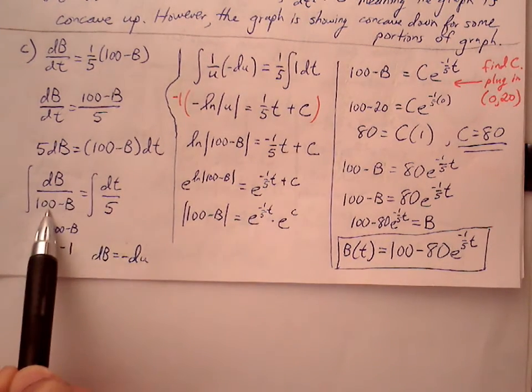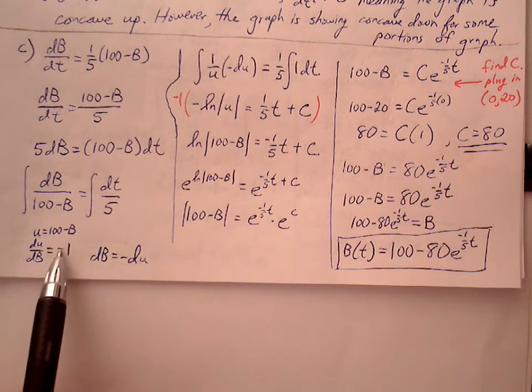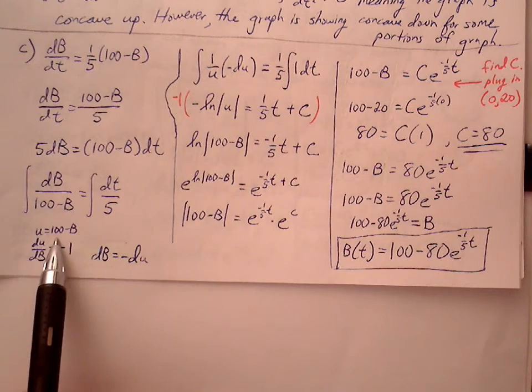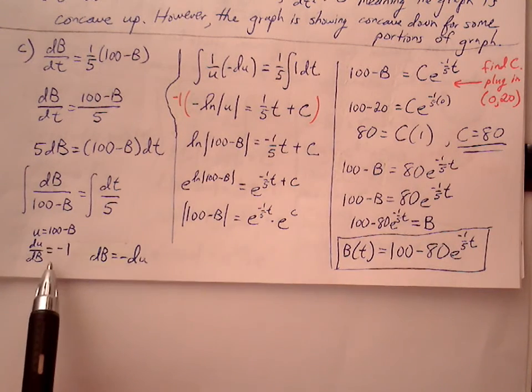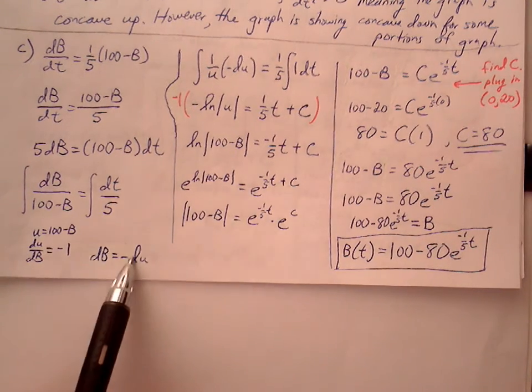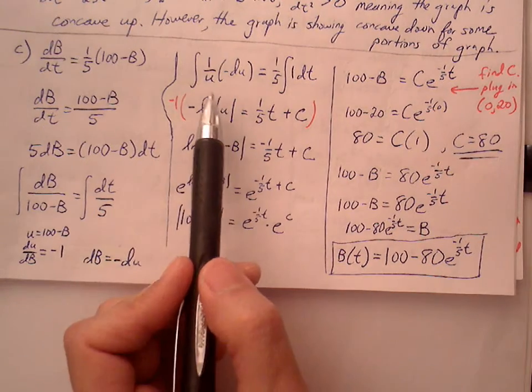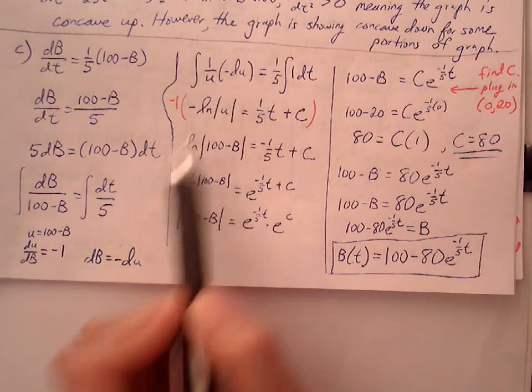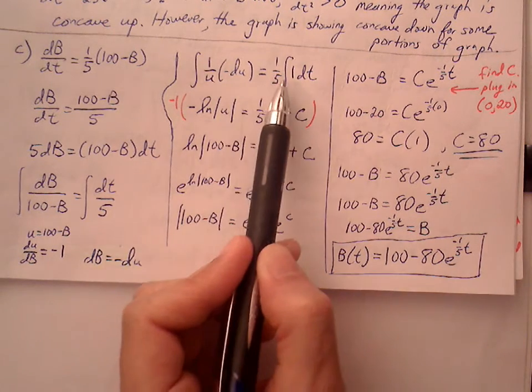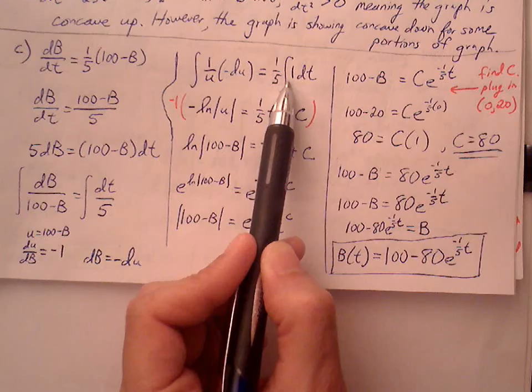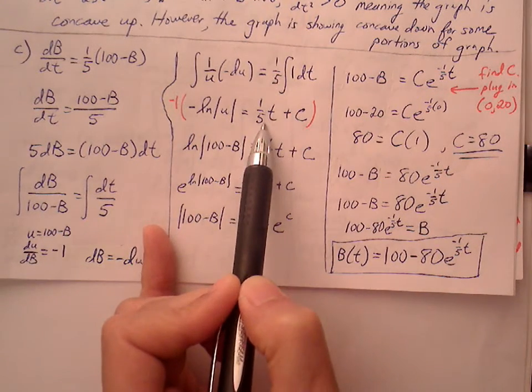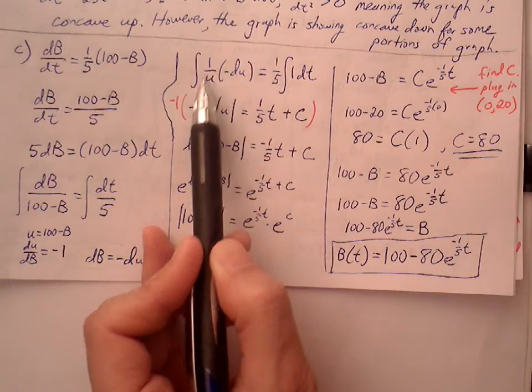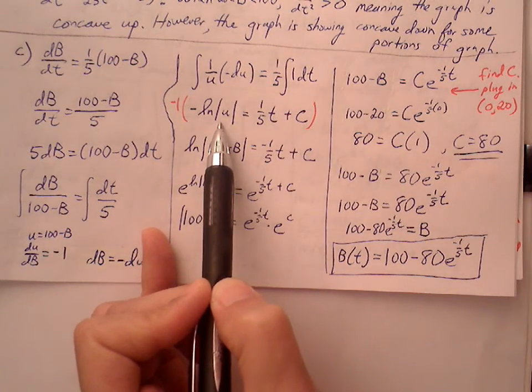I know this is going to be a u-substitution problem. I'm going to let my u value be (100 - B). My du/dB is just 0 minus 1. 100 goes to 0, negative B becomes negative 1, so for dB I get negative du. Once I make that substitution, I get integral of 1/u times negative du. I can think of this as 1/5 integral times dt. So integral of 1 becomes t, 1/5 coefficient in front, 1/u times negative 1, I get negative natural log of absolute value of u.